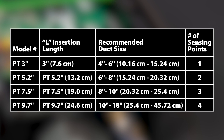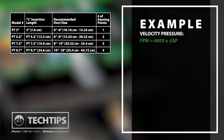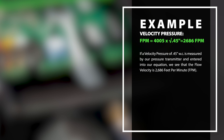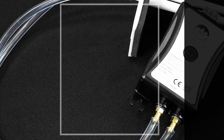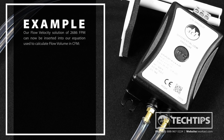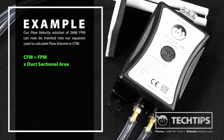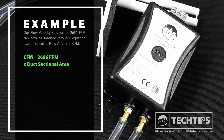The differential pressure transmitter output provides the velocity pressure to be used in our equation. If a velocity pressure of 0.45 inches of water column is measured by our pressure transmitter and entered into our equation, we see that the flow velocity is 2,686 feet per minute. Our flow velocity solution can now be inserted into our equation used to calculate flow volume in CFM.